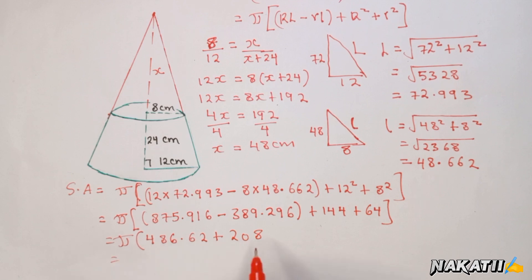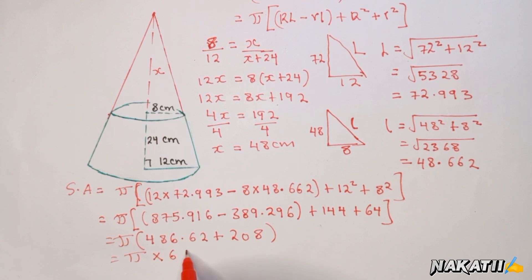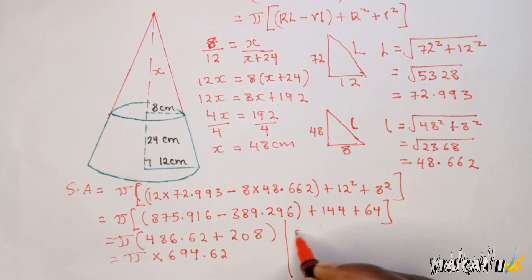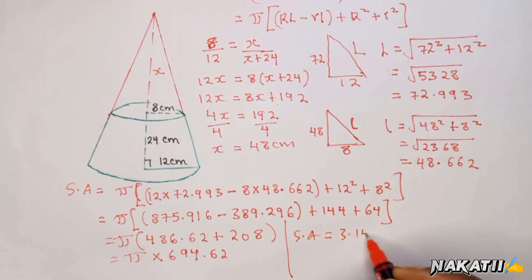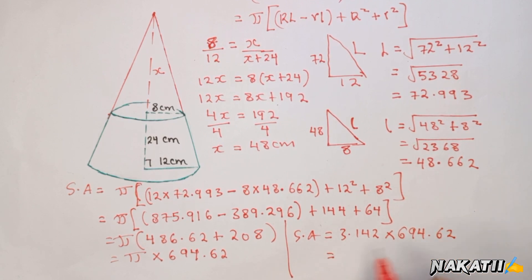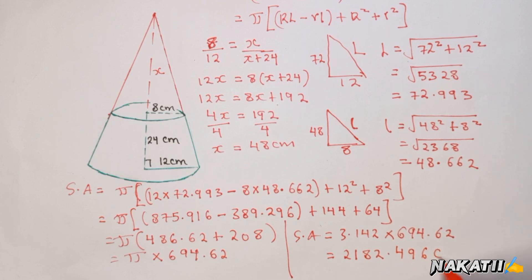Surface area = 3.142 × 694.62 = 2182.496 cm². That is how you calculate the total surface area of a circular frustum. Thank you for watching — see you in the next lesson.